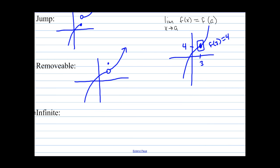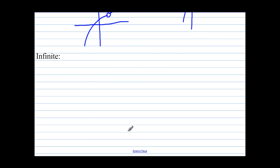The last one is an infinite discontinuity, and those are talking about asymptotes. So we have an asymptote here, and maybe the function looks like that. That's an infinite discontinuity, because the graph is shooting up to infinity on the right and down to negative infinity on the left.